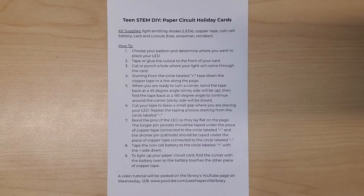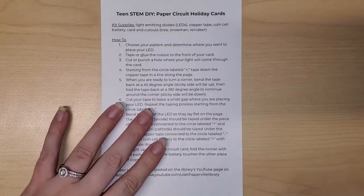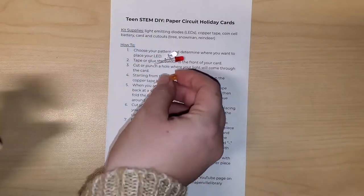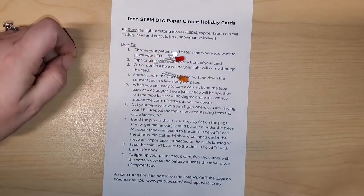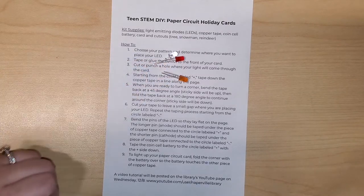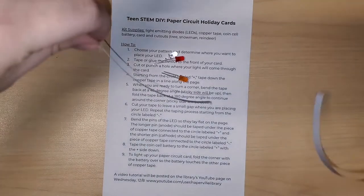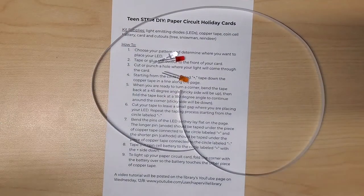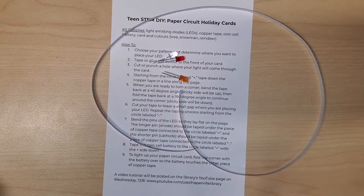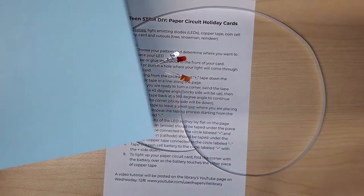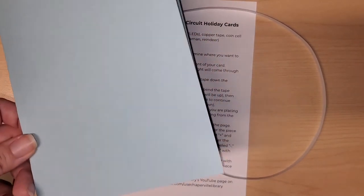What you're going to find in your craft kit is your instructions for the craft. You'll have three light emitting diodes or LEDs - they're going to be in clear which comes out kind of white with the light, red and orange. You'll have a piece of copper tape, a coin cell battery that looks like that.